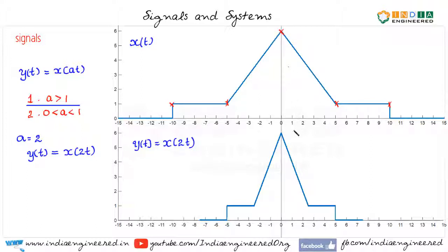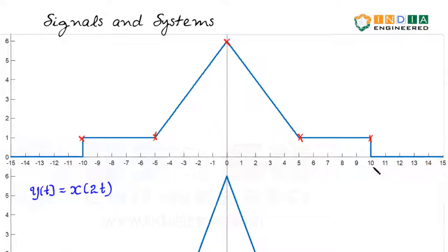x of 5, this point should come at x of 2.5. This is x of 10 and it should come at x of 5. An even faster solution to plot y of t from x of t is to just divide the independent variable by 2. That means here this point will be minus 2.5, this will be minus 5, this will be 2.5 and similarly, we just have to divide all these by 2.